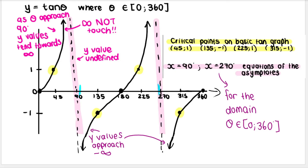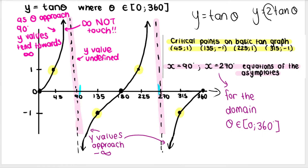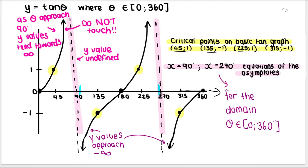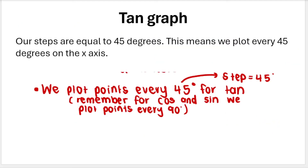I've also highlighted what we call the critical points on the basic tan graph. When I say the basic tan graph, I mean y is equal to tan theta — not something like y equals 2 tan theta, because when we do that we change the critical points. Here are the critical points and we do need to plot them — it's a good idea to label them. So this would be 45 and 1, this would be 135 and negative 1, and so on. As a reminder for tan graphs, our steps are in 45 degrees — we plot every 45 degrees, whereas for cos and sin it was every 90 degrees.